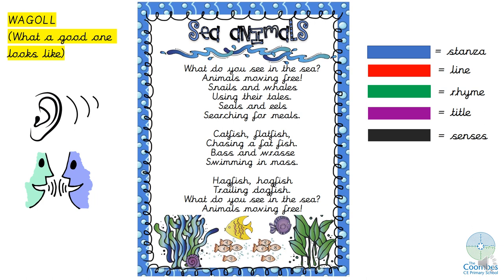Now we need to go over the features so you can remember the different parts of the poem. We have a stanza, a line, a rhyme, a title and senses. What I want you to do is pause the video, have a chat to your grown-up, and see if you can identify these things in the poem. Pause the video and play it again when you are ready for answers.